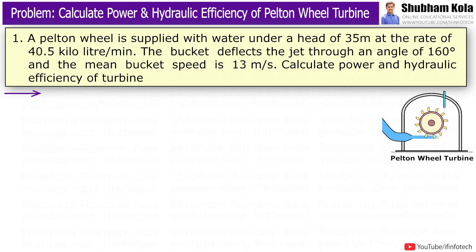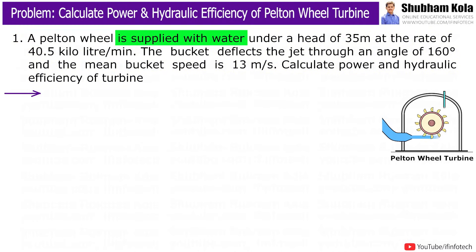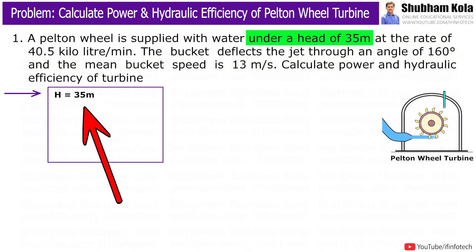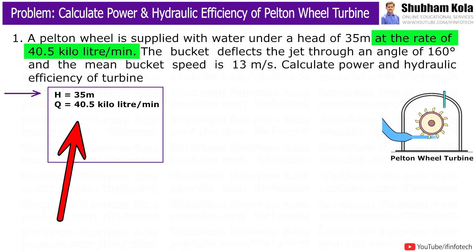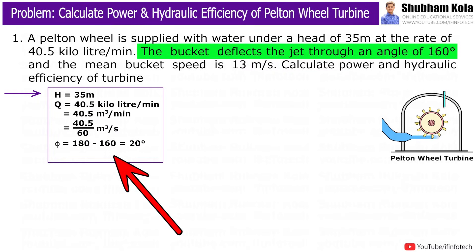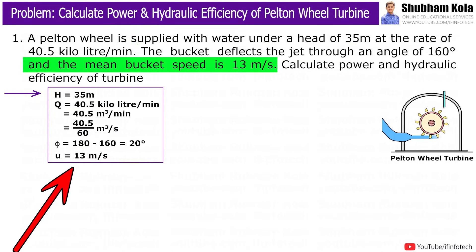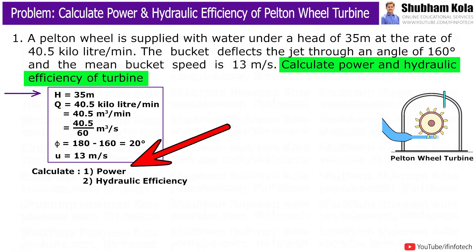So here is the statement: a Pelton Wheel is supplied with water under a head of 35m at the rate of 40.5 kL per minute. The bucket deflects the jet through an angle of 160 degree and the mean bucket speed is 13 m/s. Calculate power and hydraulic efficiency of turbine.